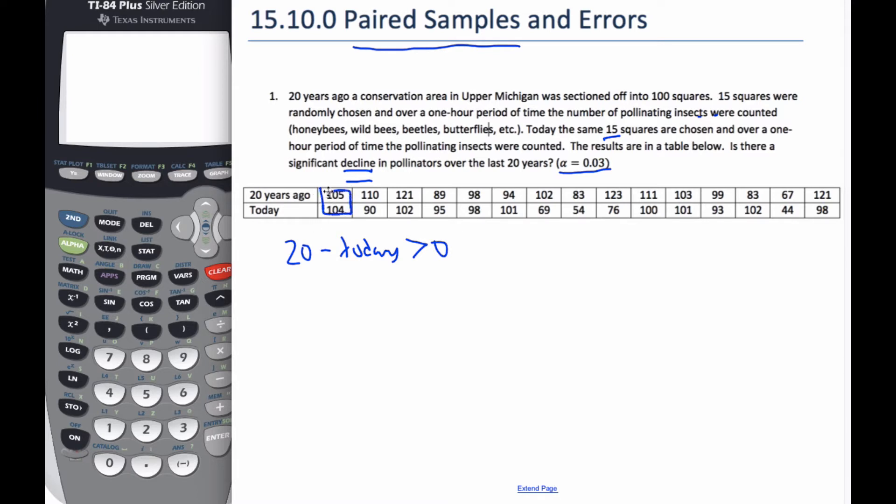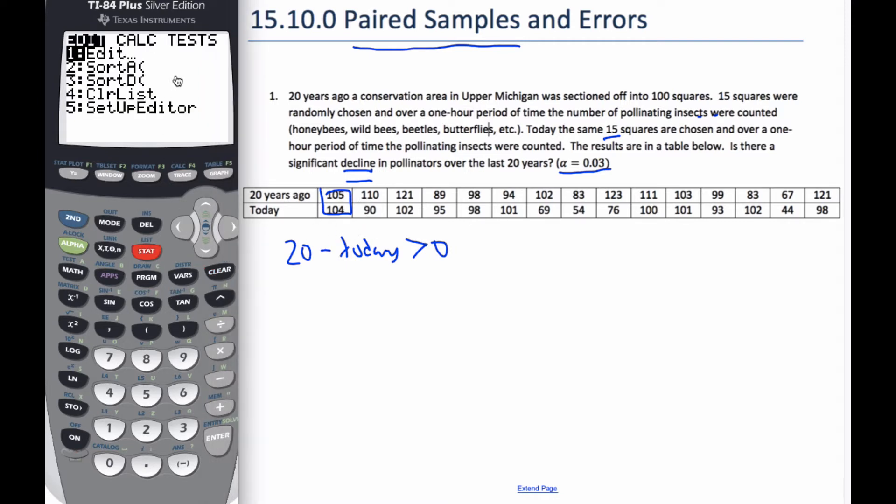Because this is the same square, right, of these 100 square areas, they're the best controller themselves. It's a paired sample. I'm going to subtract those values. So, I go to my calculator, and I'm going to go to edit,